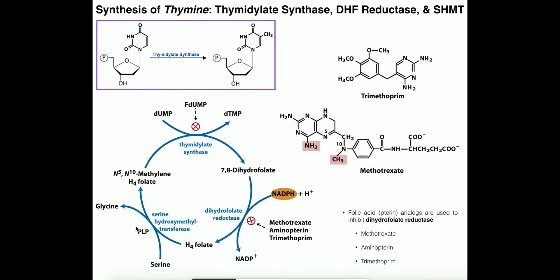The purpose of this cycle is to keep generating N5-N10-methylene tetrahydrofolate, which donates its one carbon to DUMP to make DTMP. To form the triphosphate form, DTMP must be phosphorylated twice, each by a different enzyme — we'll look at that in another video. Now I want to talk about the inhibition of a couple of these enzymes.